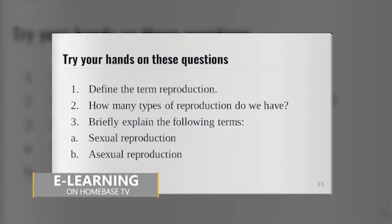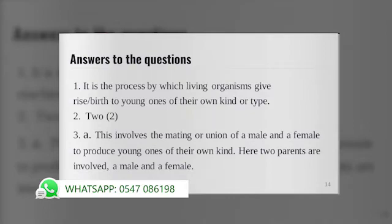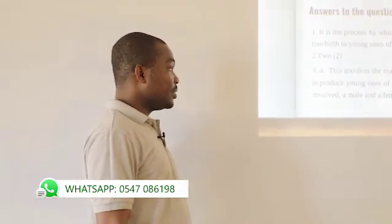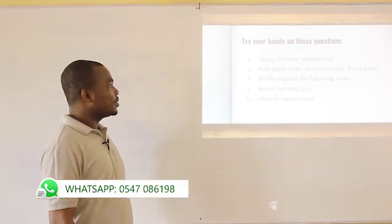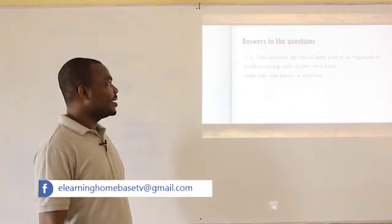Question three: briefly explain the following terms. A, sexual reproduction. Answer: this involves the mating or union of a male and a female to produce young ones of their own kind; two parents are involved, a male and a female. If that is the answer you gave, you are 100% correct. B, asexual reproduction. Answer: this involves the use of body parts of an organism to produce young ones of their own kind; only one parent is involved. I know you got that right — mark your work and score.